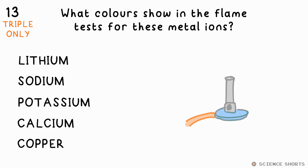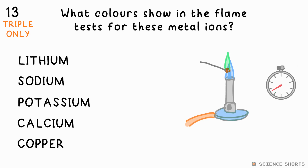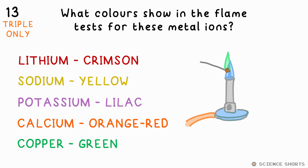What colours do you get for the flame tests done with these five metals? Lithium gives a crimson flame, sodium yellow, potassium lilac, calcium orange-red, and copper green.